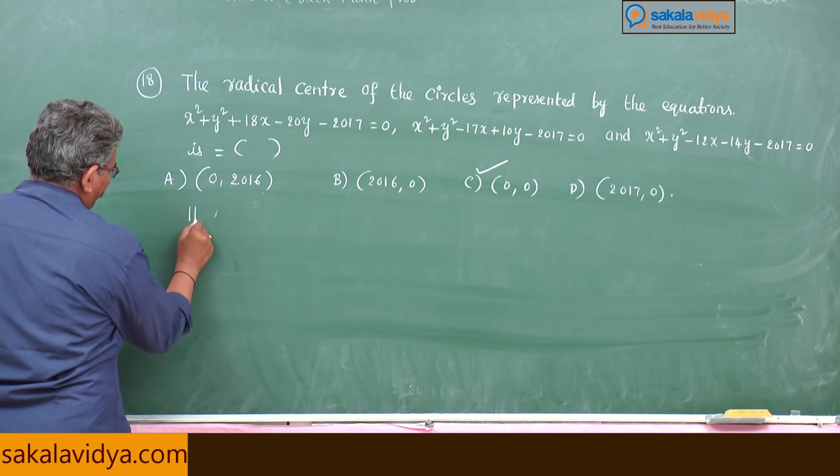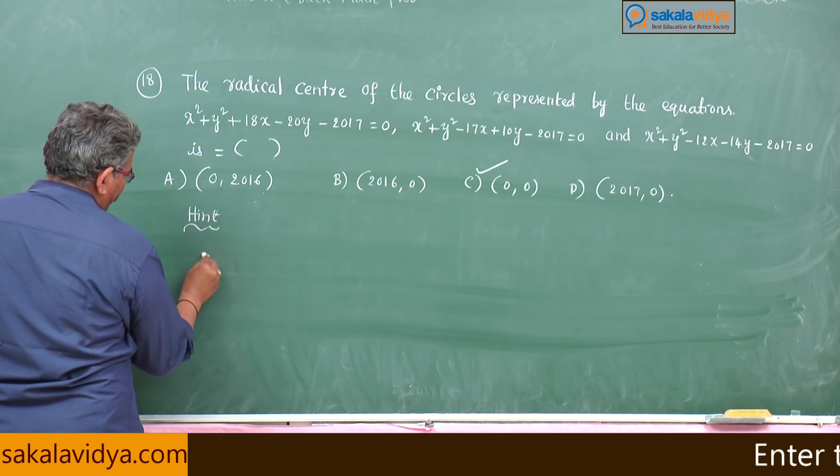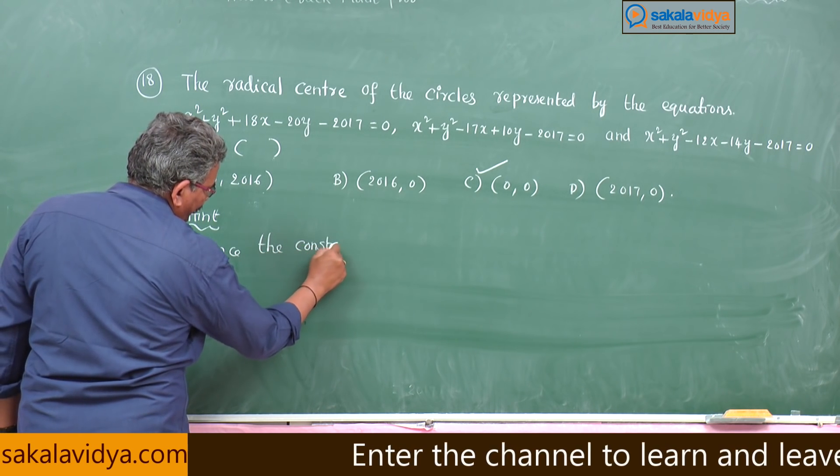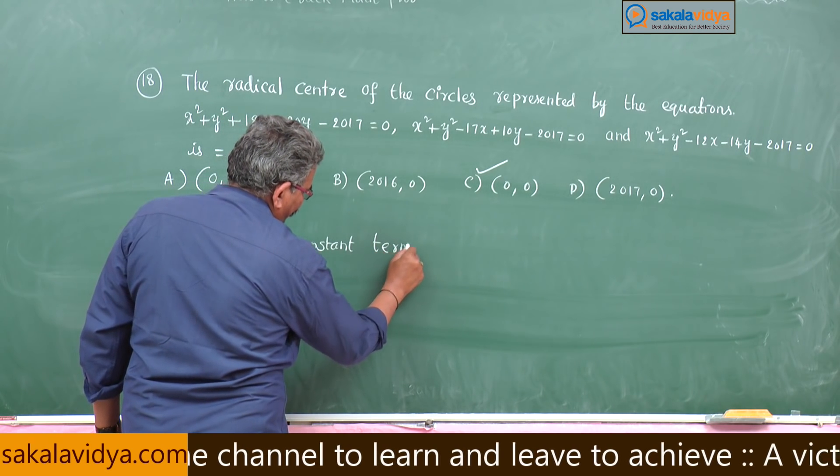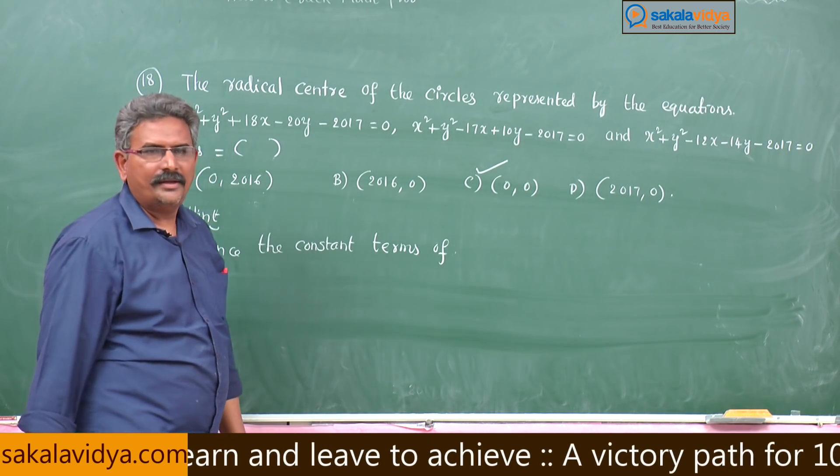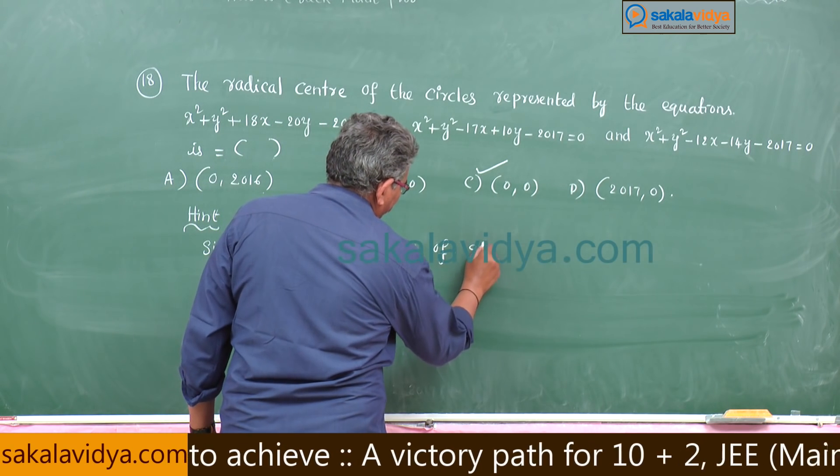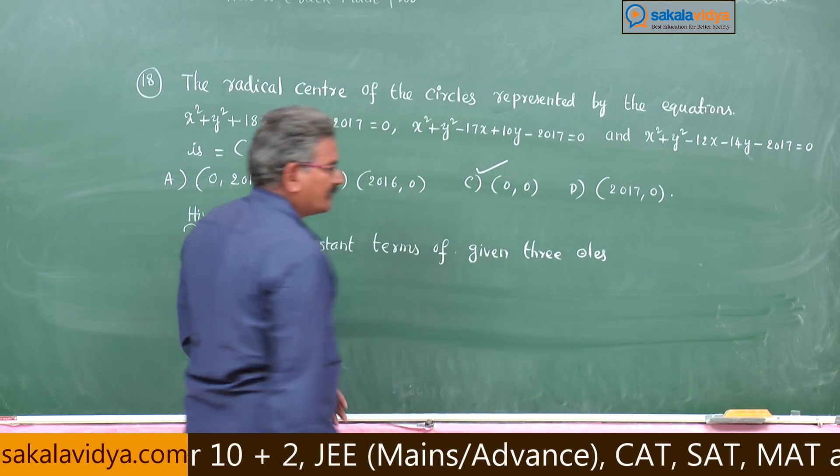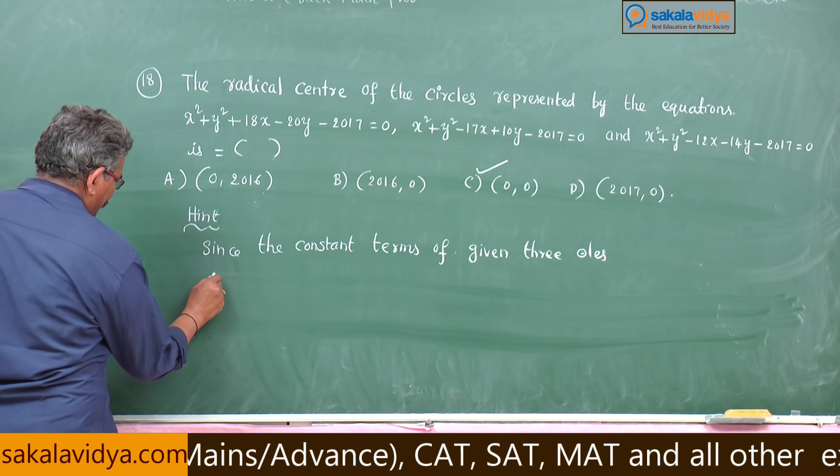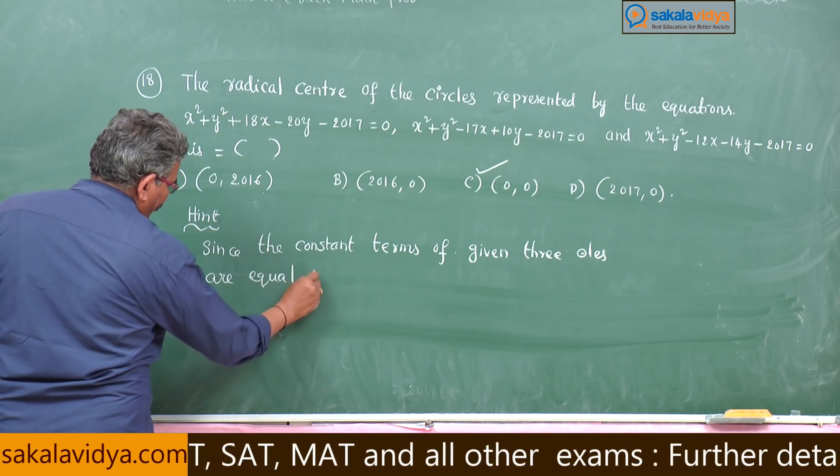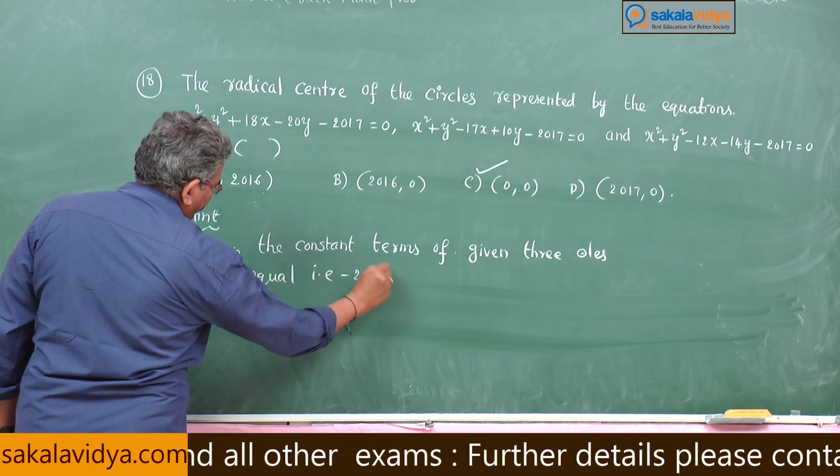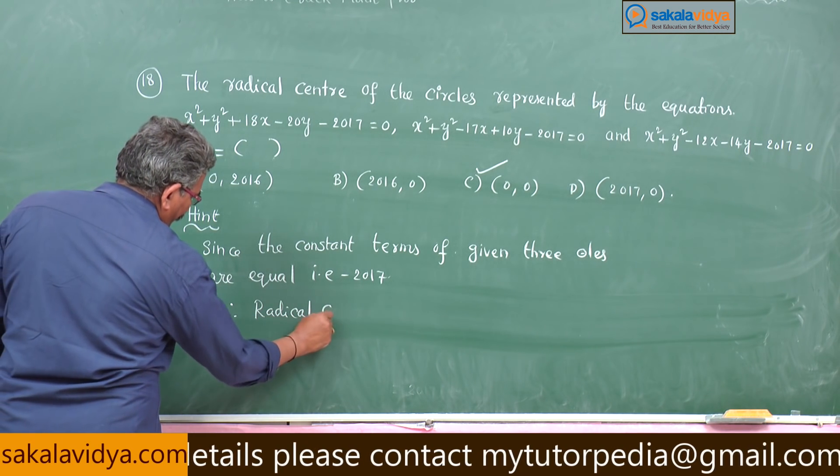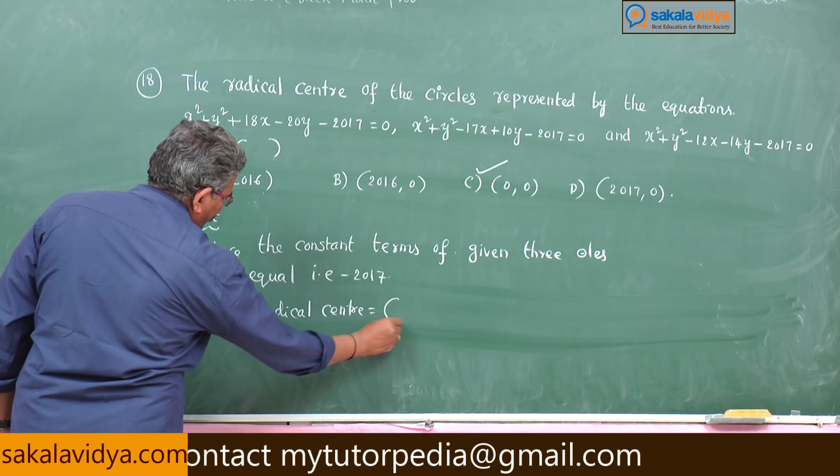Here a hint writer. Since the constant terms of given three circles, Radical Centre is equal to origin 0 comma 0.